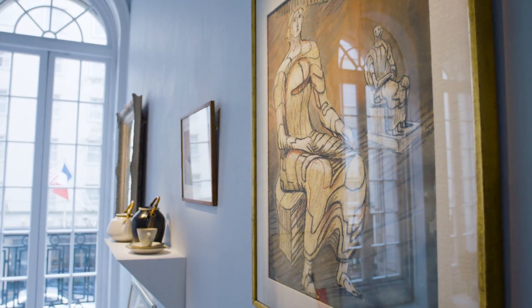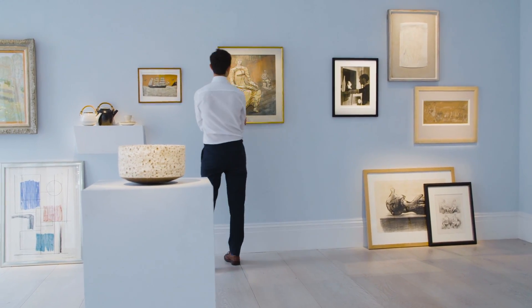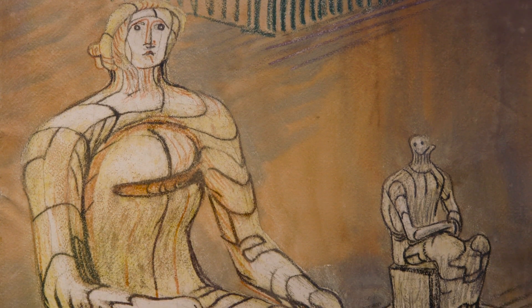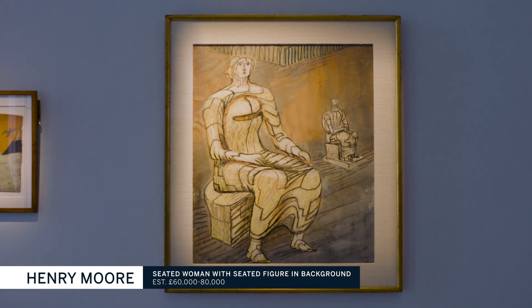Henry Moore worked in so many different mediums. The seated woman with a seated figure in the background dating from the 1940s showcases Moore's skill as a draughtsman, the way he uses the line to create the female form.